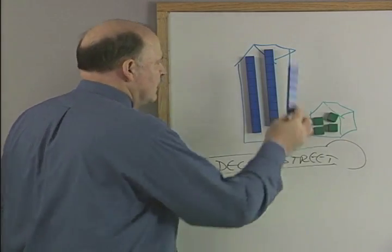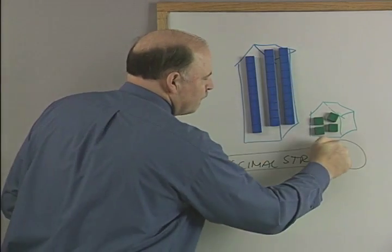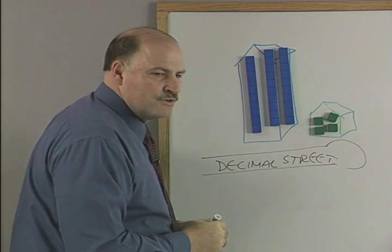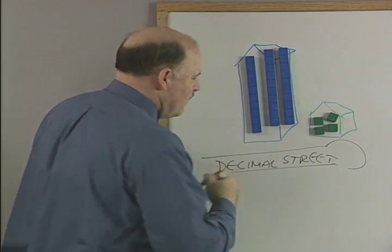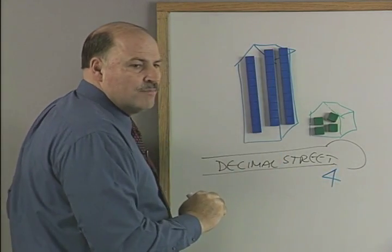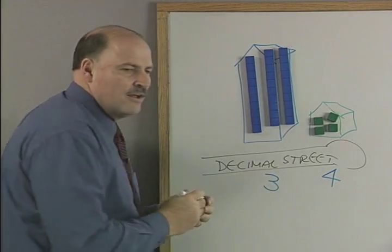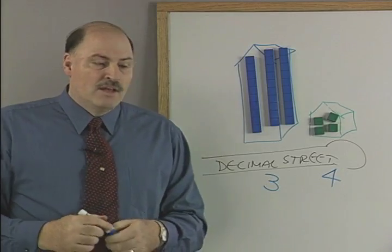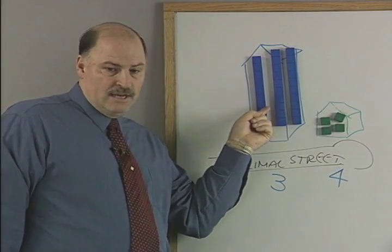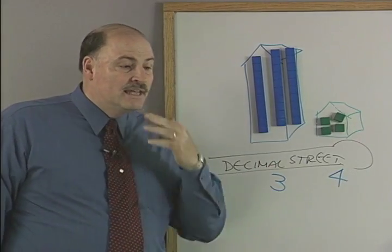Let's do a different problem now. We'll put some more numbers in here and knock down the street. How many people are home today, Mr. Unit? Four. We put a four here. How many tens are home? Three. Notice how we build it and then we write it and then we say it.